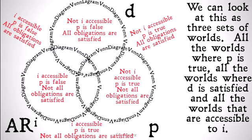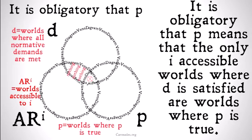We can look at this as three sets of worlds: all the worlds where P is true, all the worlds where D is satisfied, and all the worlds that are accessible to I. We'll use this format through the rest of the video to understand what we mean by certain phrases. It is obligatory that P means that the only I-accessible worlds where D is satisfied are worlds where P is true — the only worlds that are both I-accessible and where all normative demands are met are worlds where P is true. You can still have worlds where all normative demands are met but P is not true, but they can't be I-accessible worlds.